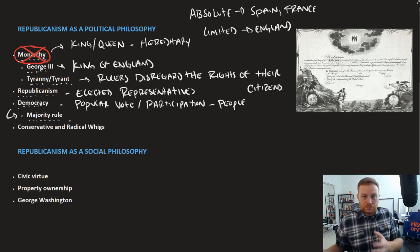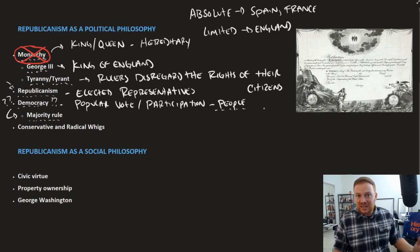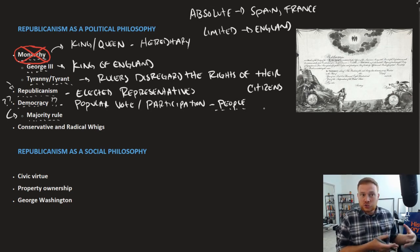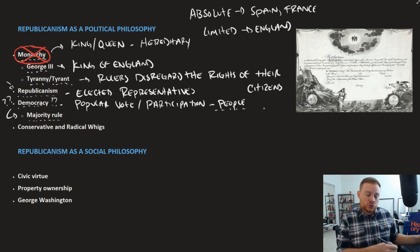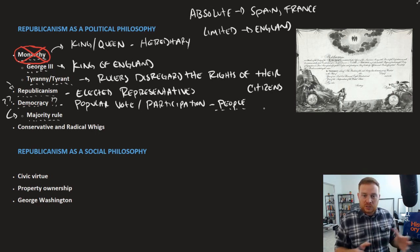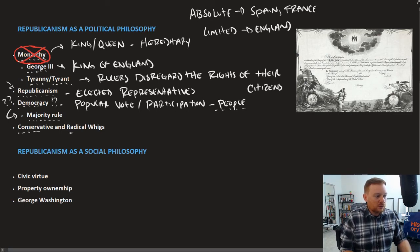For the United States, most favored a republican style of government, but the question was how democratic it should be — to what extent should the people have a say? There was a range of opinions, but we can categorize them into two groups: conservative and radical Whigs. The term Whig was used in England to mean somebody who opposed the king, or more particularly, monarchy in general.